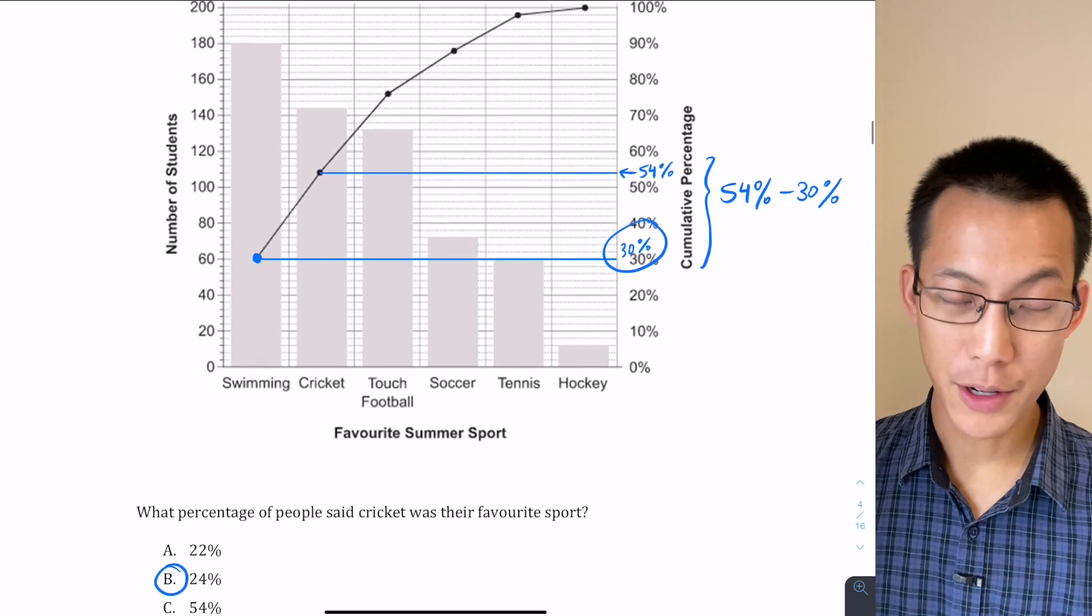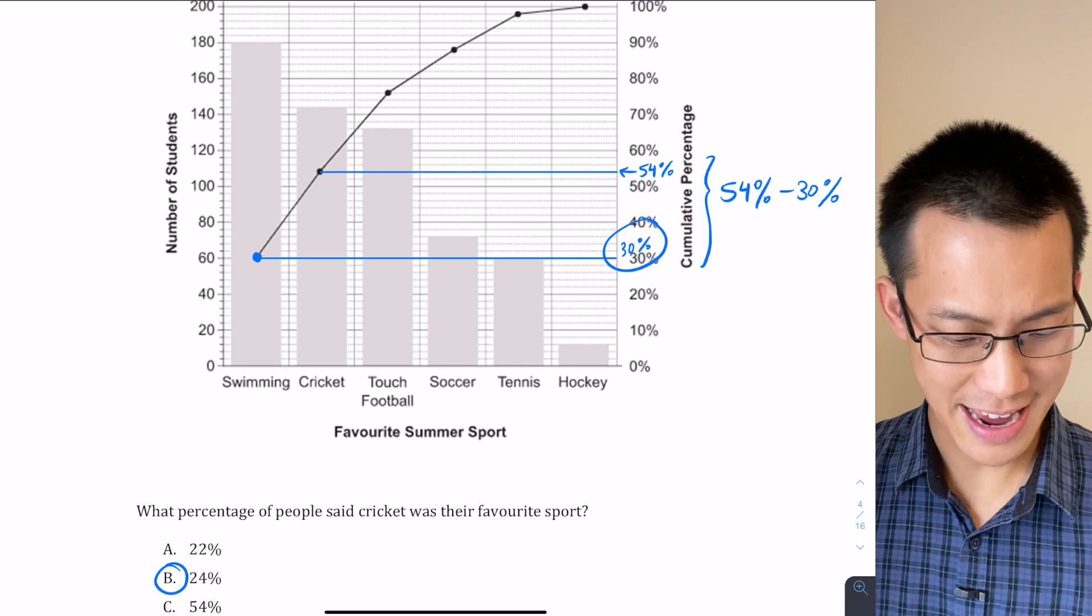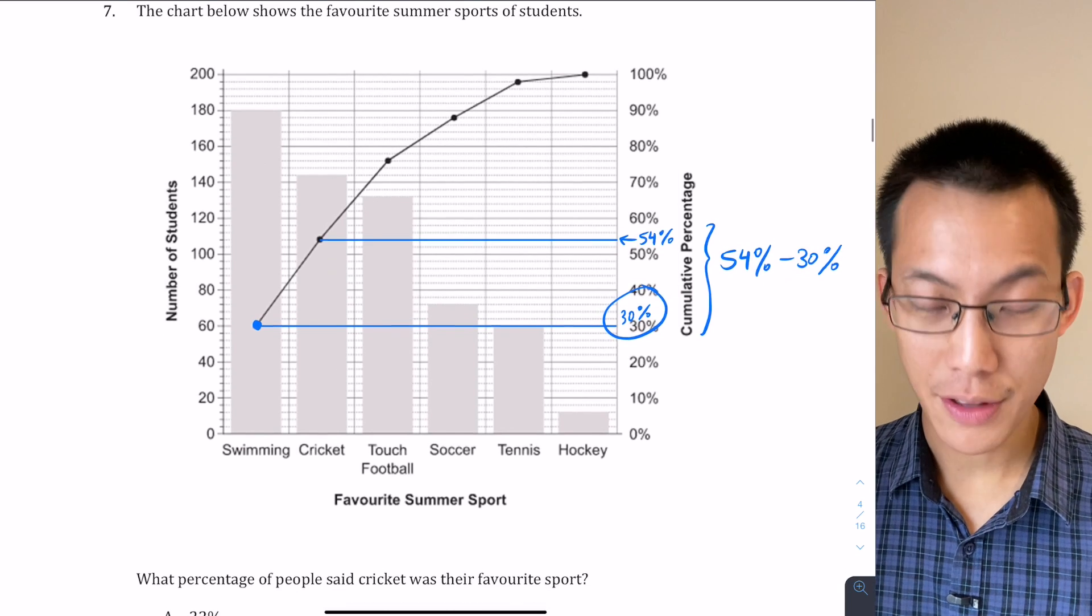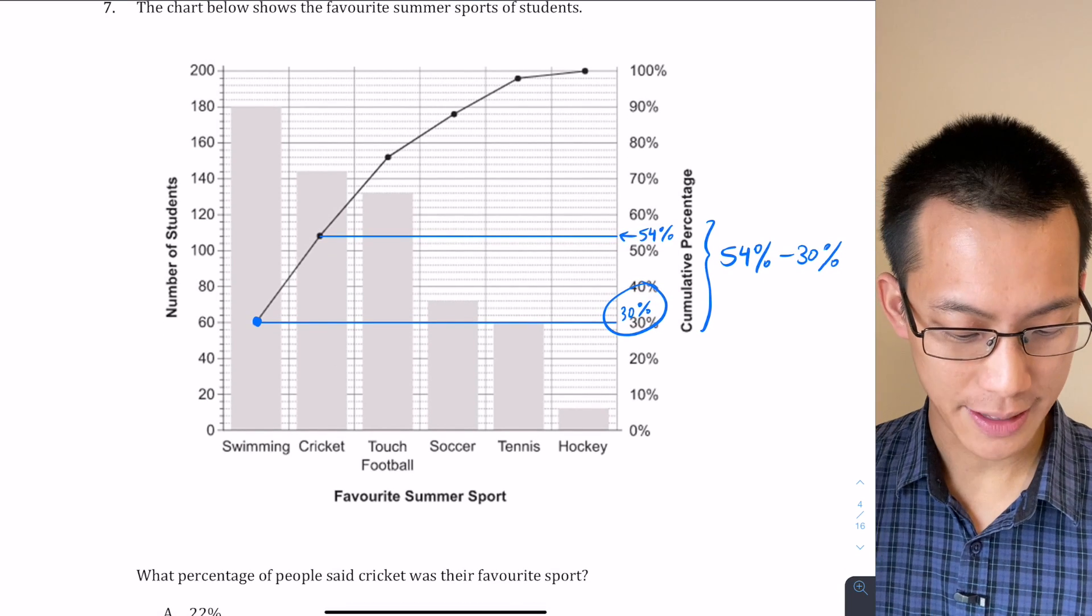Much quicker than actually going through calculating every other total, and also less error-prone, because it's quite hard—you can see I even made a brief mistake trying to read and interpret the graph. You have to be super careful. So that's the easiest way and the fastest way to get there.